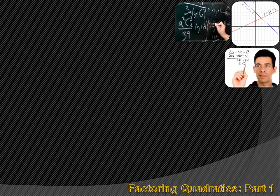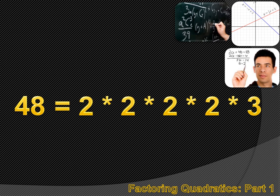We're going to factor these quadratics. You understand factoring — you factor numbers. You'd know how to factor 48: you'd break it up into the prime numbers that you could multiply by each other to equal 48. 48 equals 2 times 2 times 2 times 2 times 3. And when I factor 48, I break it up into its components.